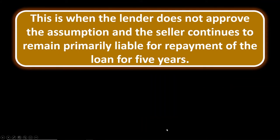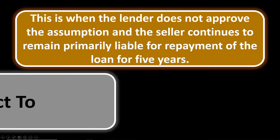Finance number five: this is when the lender does not approve the assumption and the seller continues to remain primarily liable for repayment of the loan. You don't see these often in practice, but because it's an unusual concept you might see it on the state exam. This is called subject-to — the borrower is not approved by the lender to assume the loan, so they take it subject-to, and the seller remains primarily liable for repayment for five years from the assumption date.